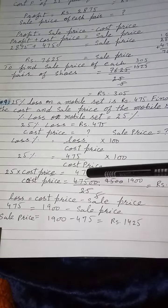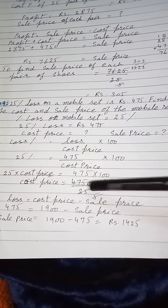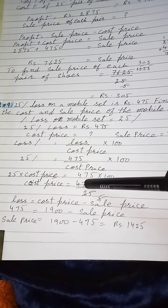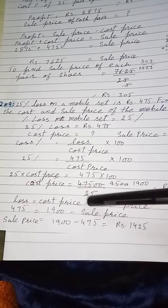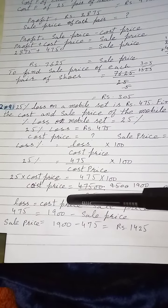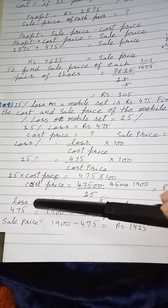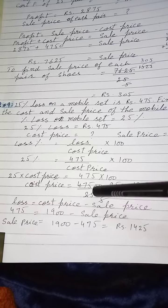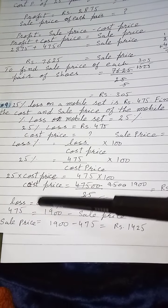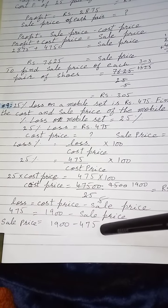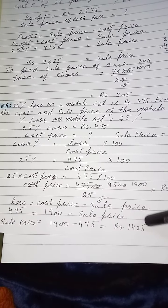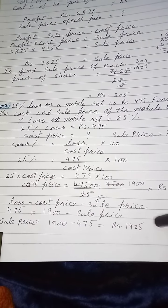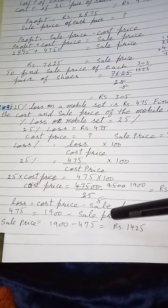Sale price بھی بتانی ہے تو formula لگائیں گے: loss is equal to cost price minus sale price۔ Values put کریں: cost price 1900، loss 475۔ Sale price find out کرنی ہے تو اسے دوسری سائڈ پہ لے آئیں، 1900 میں سے 475 minus کریں تو sale price 1425 نکل آئی۔ Mobile set کی sale price 1425 روپیز ہے۔